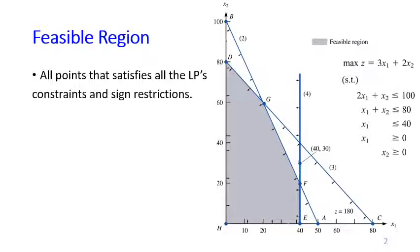A feasible region contains all points that satisfy all the constraints and the sign restrictions. Here you can see a representation or visualization of the Giapetto problem. The shaded area is the feasible region, which means that all points in that region satisfy all the constraints and the sign restrictions.